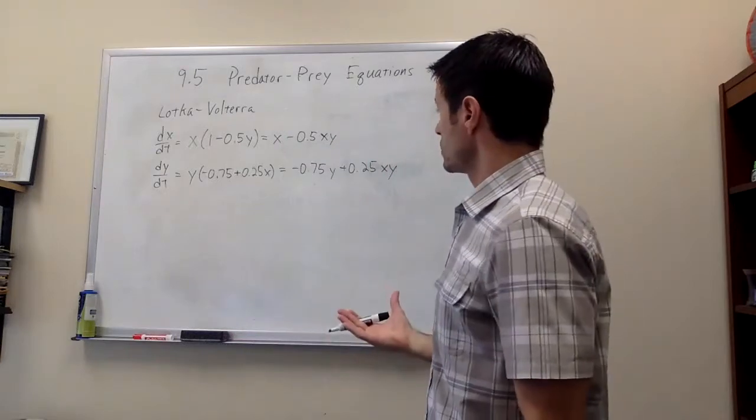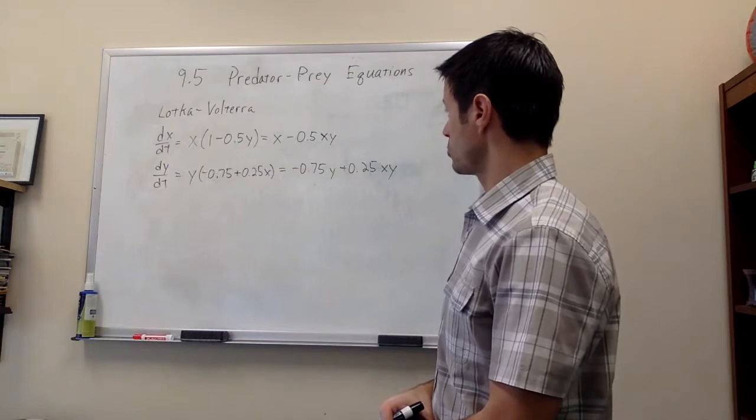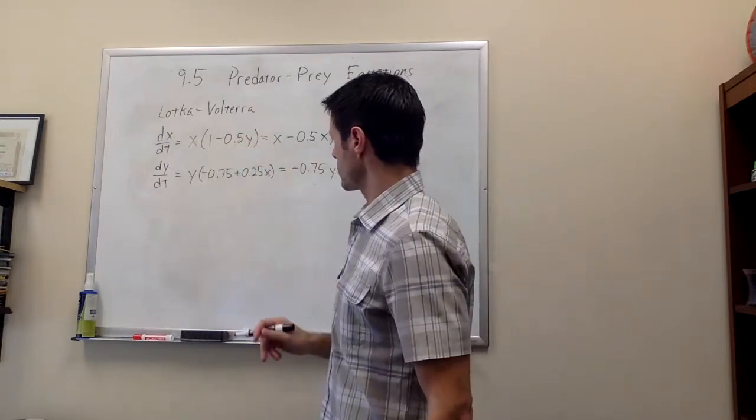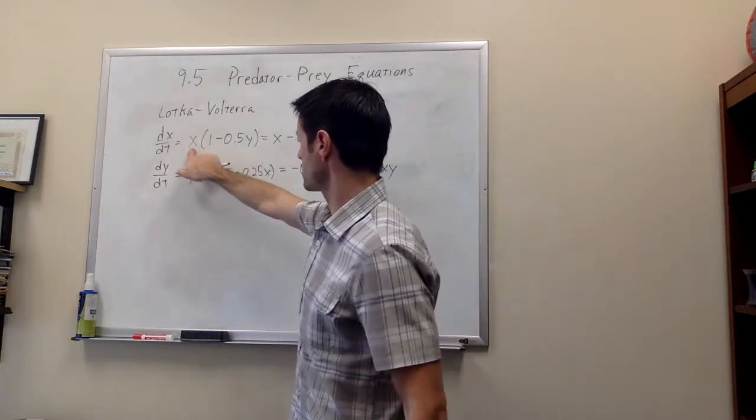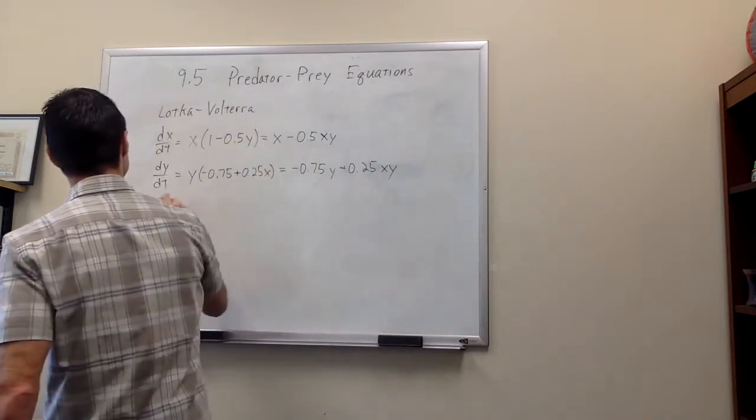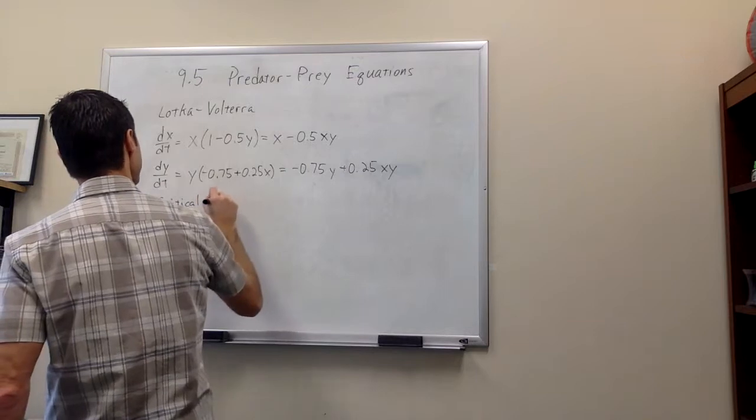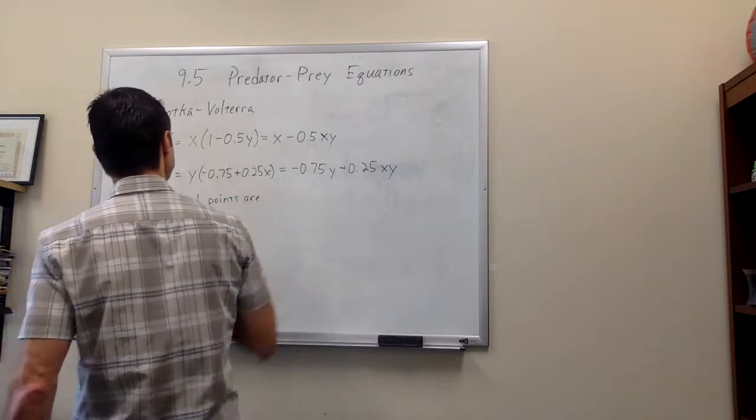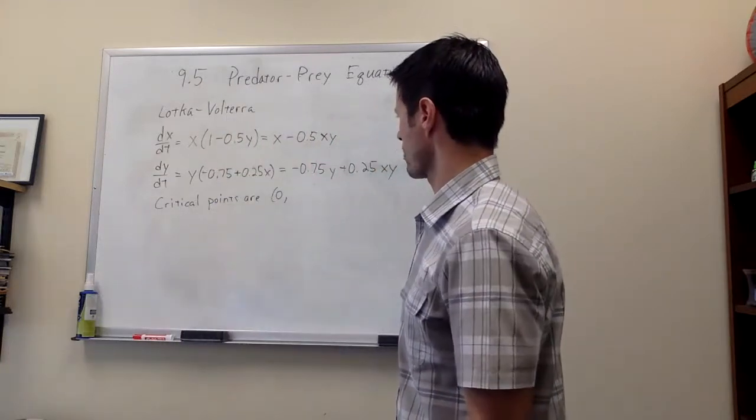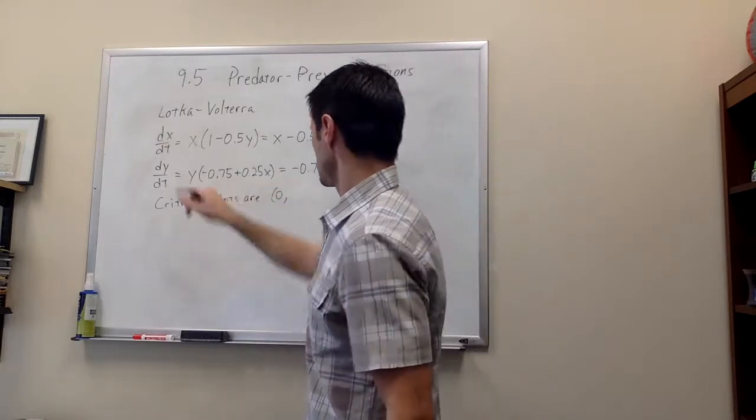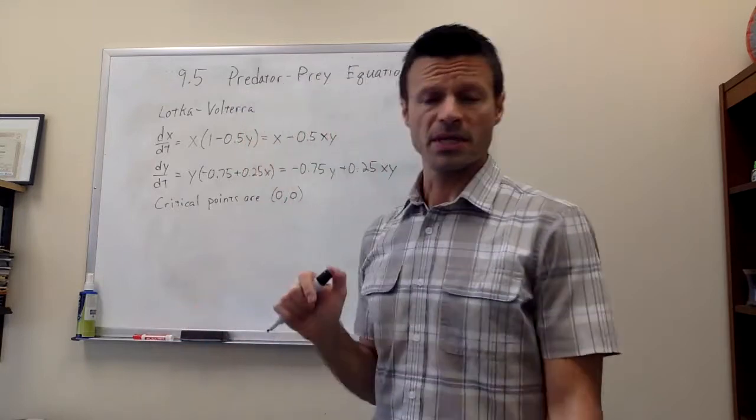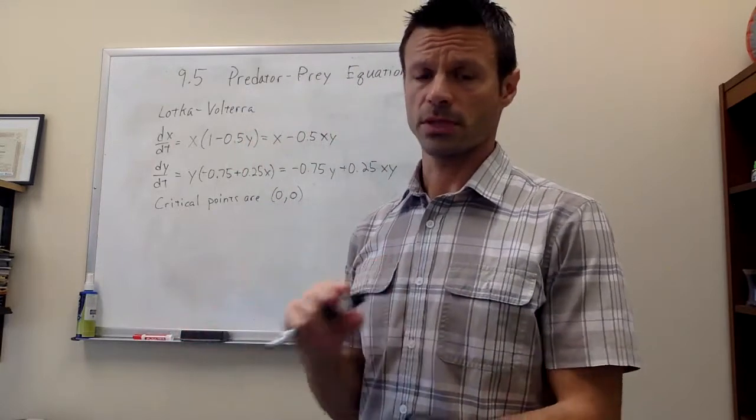So the first thing to do to analyze the system is to find critical points. In the first equation, either x is going to be 0, or y is going to be 2. So if x is 0, and if I plug that into the second equation, it turns out that y must be 0 as well. So certainly this is a critical point. This makes sense. I mean, if there's no prey and no predator, nothing's going to happen.